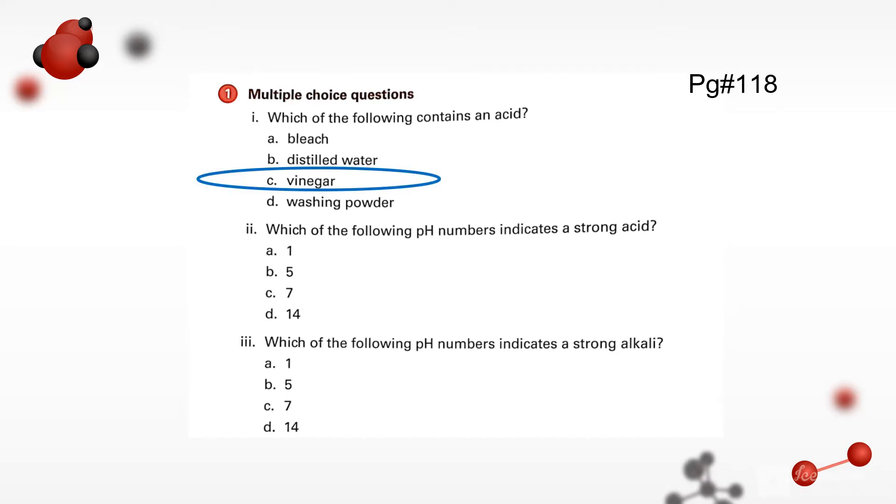The second question is: which of the following pH numbers indicates a strong acid? We all know that strong acids have a pH less than 7, so the stronger one is 1. A is the correct option.